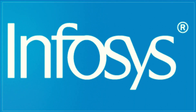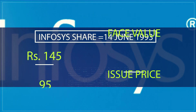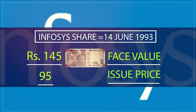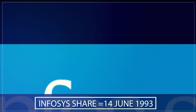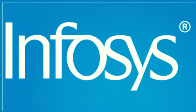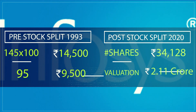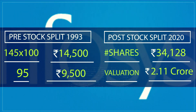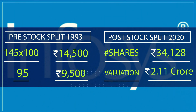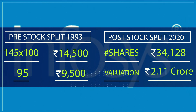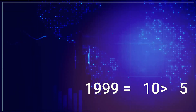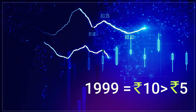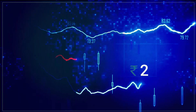Let's understand this concept with the help of an example — Infosys. Its stock was listed on BSE on 14th June 1993 at 145 rupees, against the issue price of 95 with a face value of 10 rupees. If somebody had bought 100 shares of Infosys at 95 or 145, amounting to an investment of 9,500 or 14,500 rupees respectively, now they would be holding 34,128 shares currently valued at 2.11 crore rupees with a current market price of 620 rupees. The stock split in 1999 brought the face value from 10 rupees to 5 rupees, and bonuses issued by the company have been in the ratio of 2 to 1.